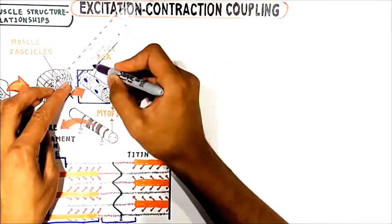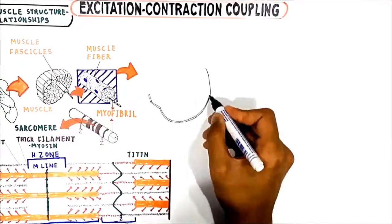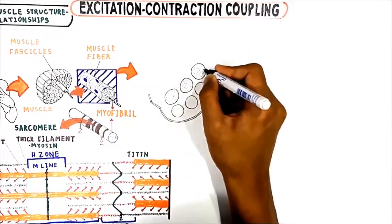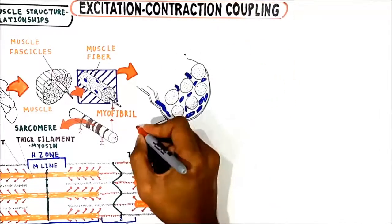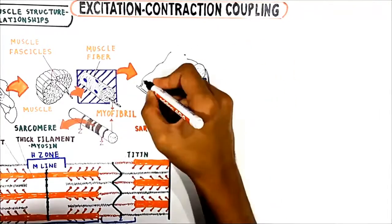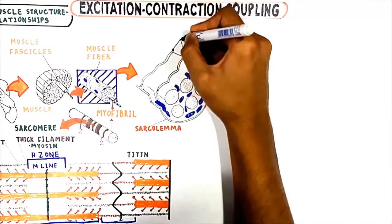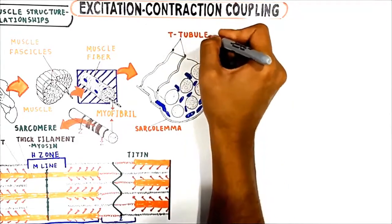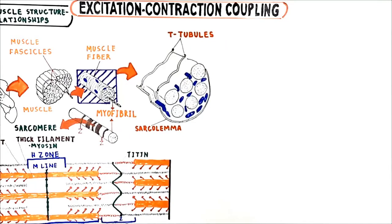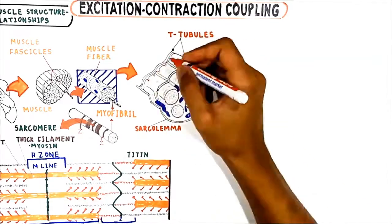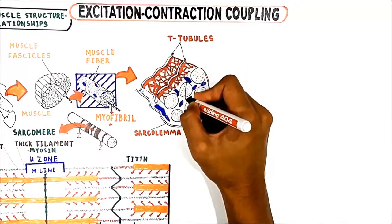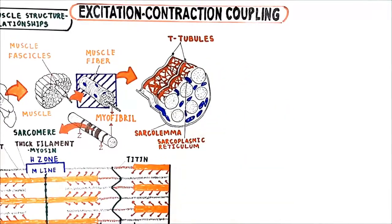Let me draw a section of muscle fiber and add an important point. The membrane which covers the muscle fiber is called the sarcolemma. In some places the sarcolemma invaginates to form tubules called transverse tubules, or T-tubules. It is very important to know that T-tubule membranes are extensions of the surface membrane, and therefore the interior of the T-tubules is part of the extracellular compartment.